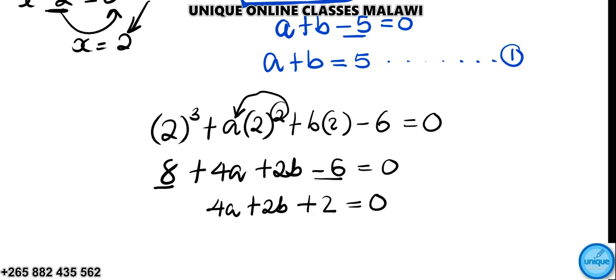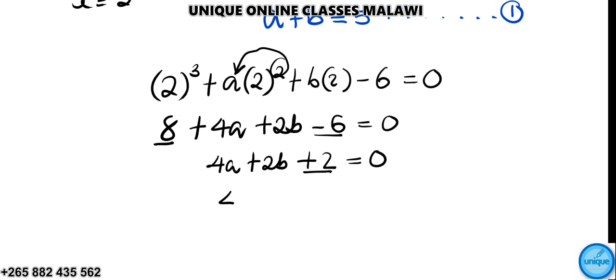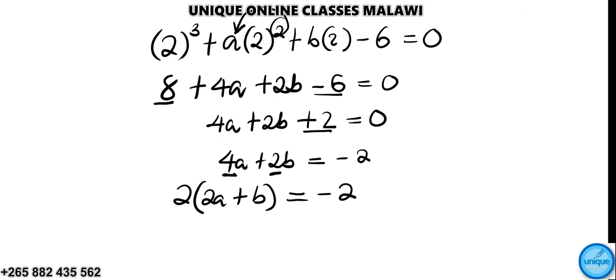So 8 plus 4a plus 2b minus 6 equals 0. Combine like terms together and you would have 4a plus 2b plus 2 equals 0. We can take this to the other side, so 4a plus 2b is equal to minus 2. We can simplify by taking out 2, so 2 times 2a plus b equals negative 2. Dividing both sides by 2, we get 2a plus b is equal to negative 1. This is equation number 2.